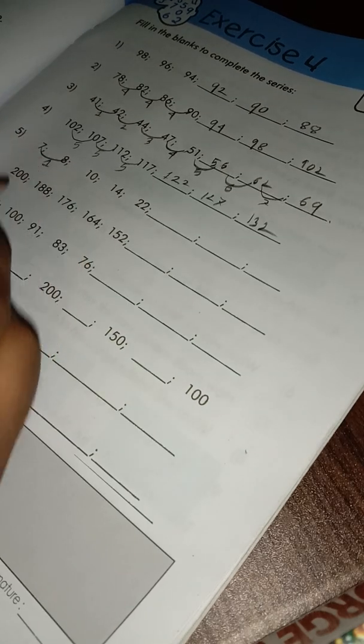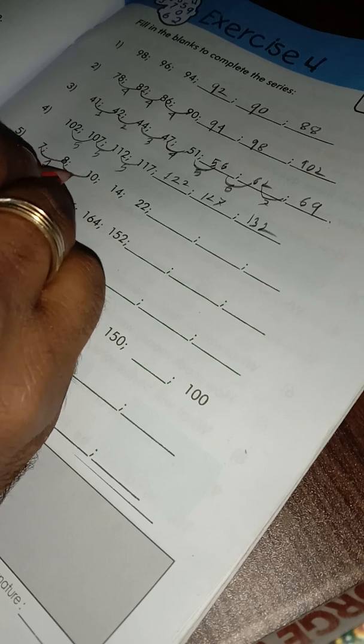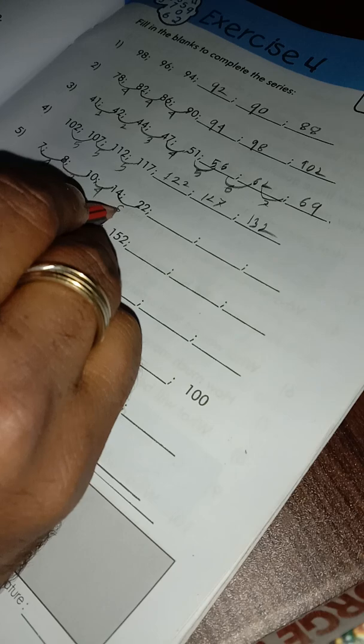Here 7, 7 minus 8 minus 7 is equal 1, and 8 minus 10 equal 2. So the increasing number is 1, then 2.